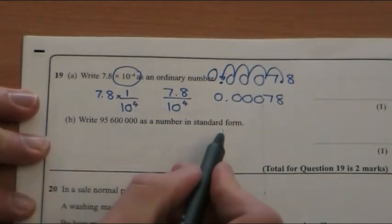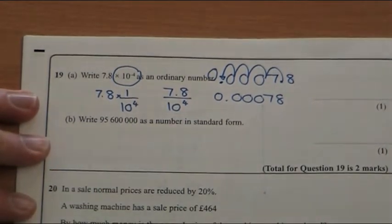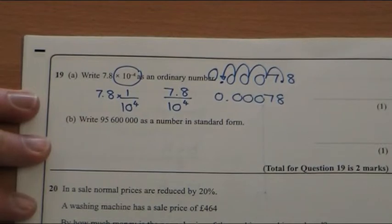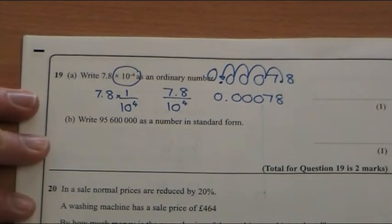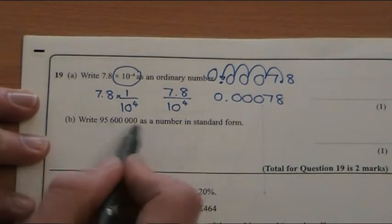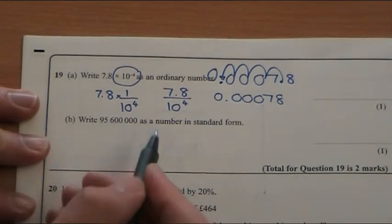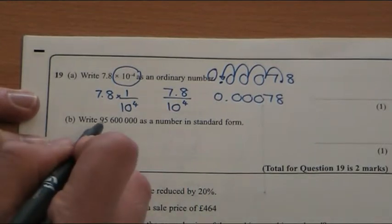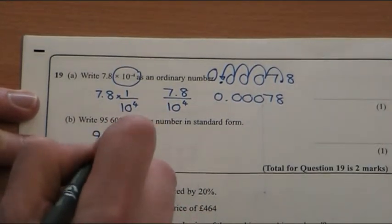And the next one is the opposite, writing in standard form. So the first number, this part, has to be between 1 and 10. So 956, well, whatever that is, 95,600,000. My first number has to be there.